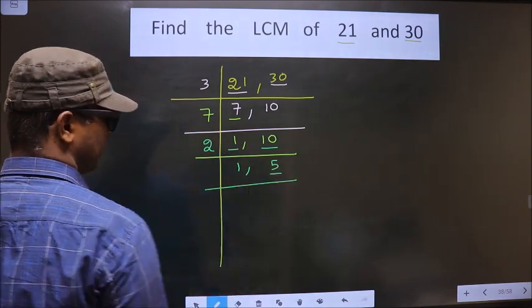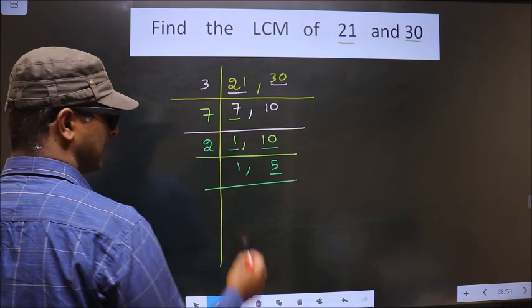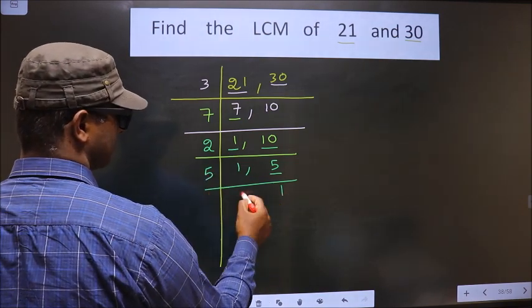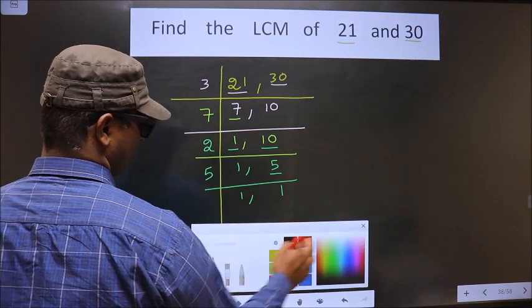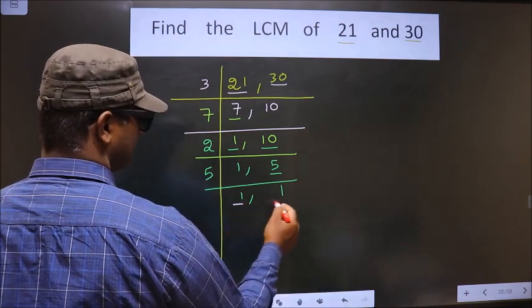Now, here we have 5. 5 is a prime number, so 5 goes into 5 once. Now we got 1 in both places.